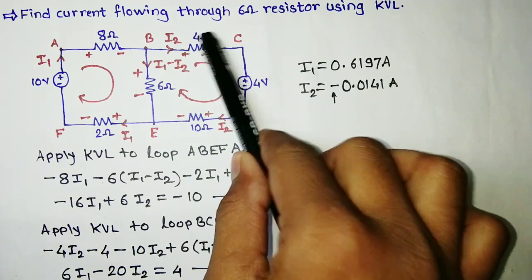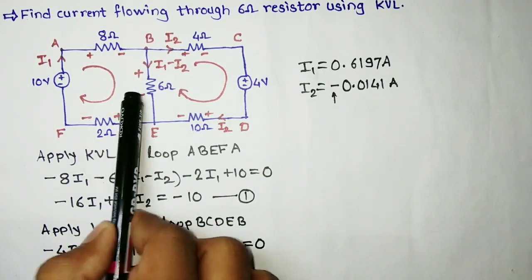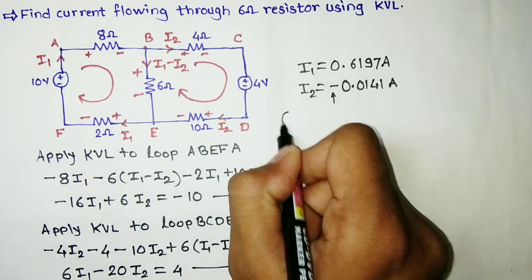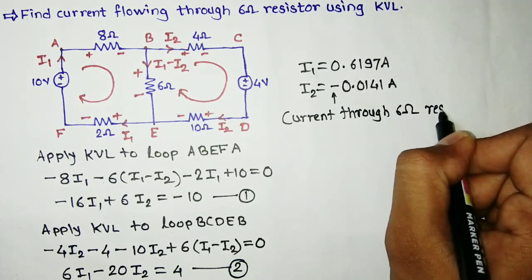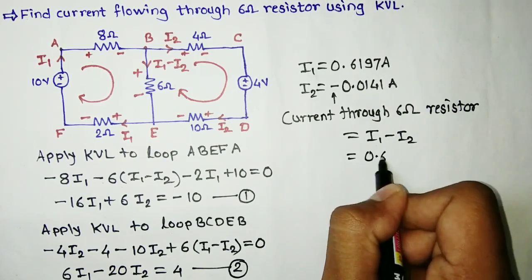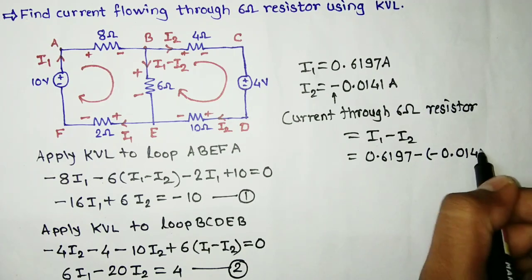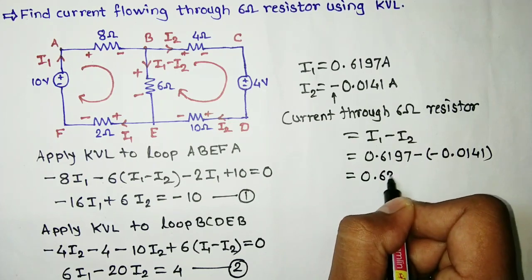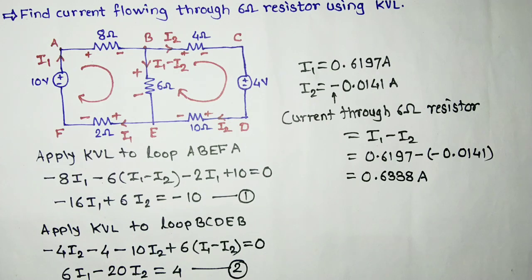To find the current flowing through the 6-ohm resistance, the current through it equals I1 minus I2. The value of I1 is 0.6197 amperes and I2 is minus 0.0141 amperes. Since minus times minus adds, the final answer is 0.6338 amperes. Therefore, by using KVL we can calculate the current flowing through any resistance.